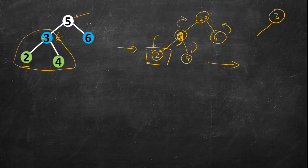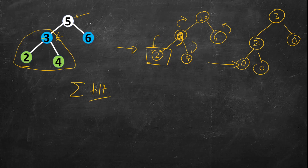For node 3, the tilt is |4 - 2| = 2. For leaf nodes, tilt is 0. In this question we are interested in the total cumulative tilt, not the tilt tree itself, so it will be 3 + 2 = 5. We can combine the two traversal steps — computing cumulative sums and computing tilts — into a single pass.